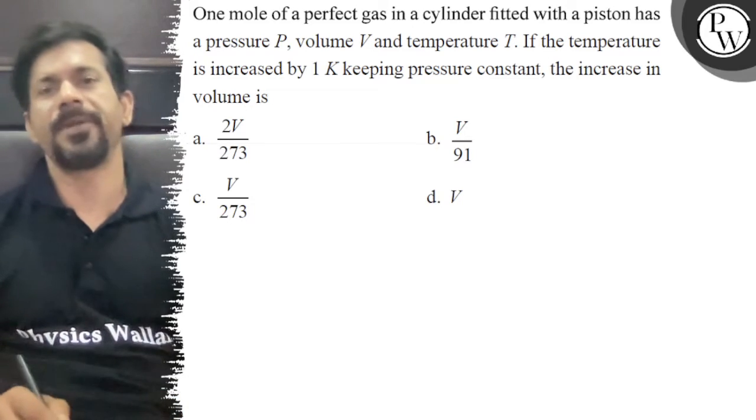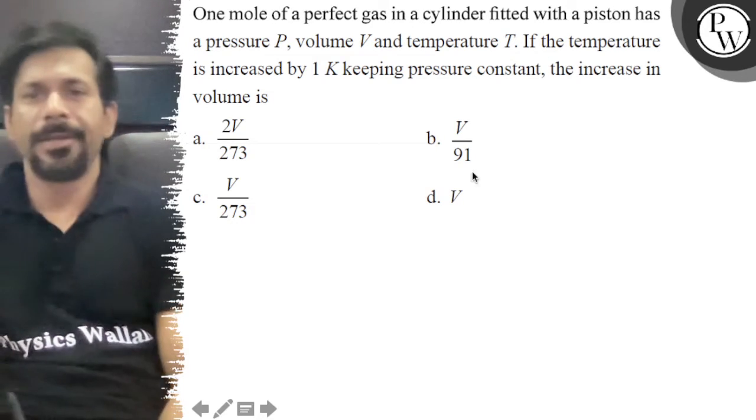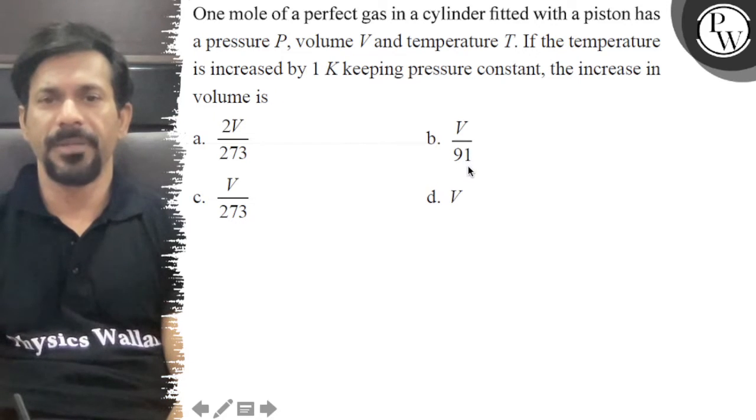Hello, let's see the question. One mole of a perfect gas in a cylinder fitted with a piston has a pressure P, volume V, and temperature T.